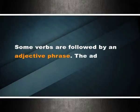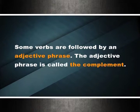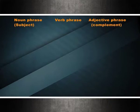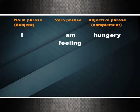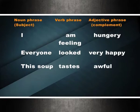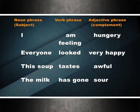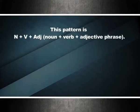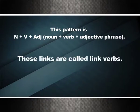Adjectives that come after copular verbs are predicate adjectives, and nouns that come after linking verbs are predicate nouns. Some verbs are followed by an adjective phrase called the complement. The pattern is noun phrase + verb phrase + adjective phrase. Examples: I am feeling hungry; everyone looked very happy; this soup tastes awful; the milk has gone sour. This pattern — N + V + adjective — uses what are called link verbs.